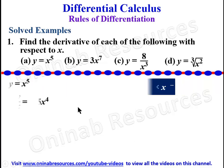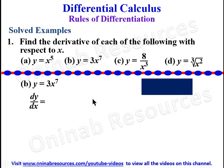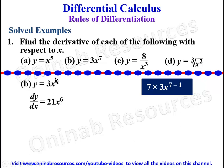For problem 1b, dy/dx will be 7 times 3, then x to the power of 7 minus 1, reducing the power by 1 after multiplying the power by the coefficient. So we have 7 times 3 equals 21, giving dy/dx = 21x raised to power 6. That is the derivative of y = 3x^7.